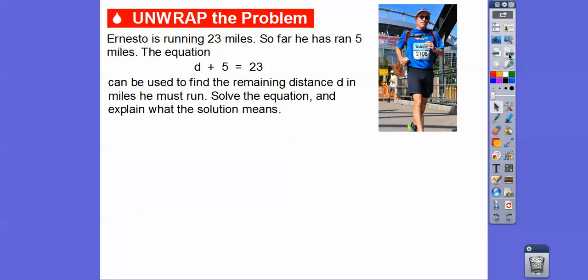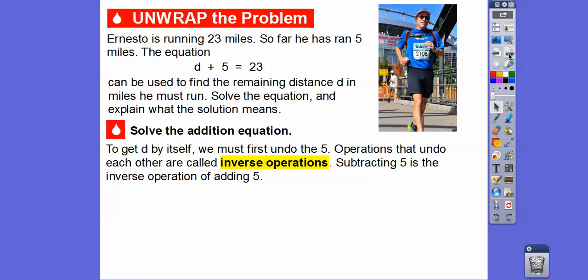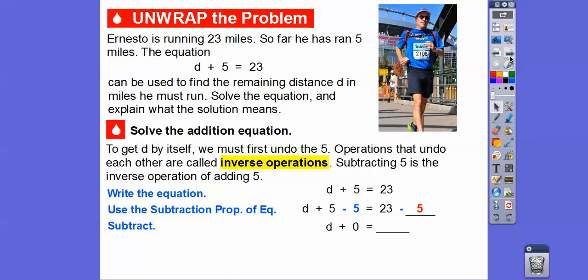Ernesto is running 23 miles. So far he has run 5 miles, and the equation d + 5 = 23 can be used to find the remaining distance d in miles that he must run. We're going to solve this addition equation. To get d by itself, we must first undo that plus 5. Operations that undo each other are called inverse operations, so subtracting 5 is the inverse operation of adding 5. Let's subtract 5 from both sides - minus 5 on the left and minus 5 on the right to balance it out. So 5 minus 5 is 0, and 23 minus 5 is 18.